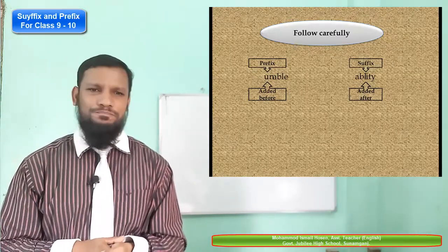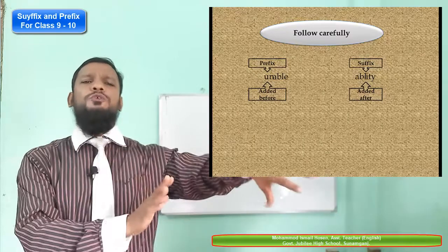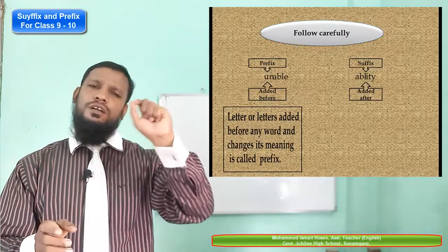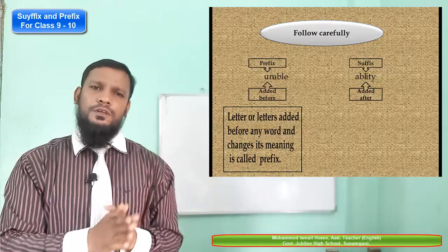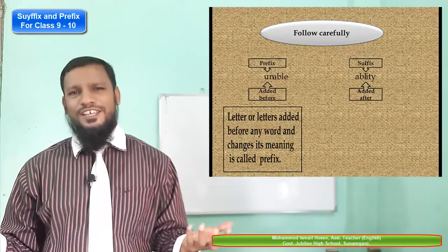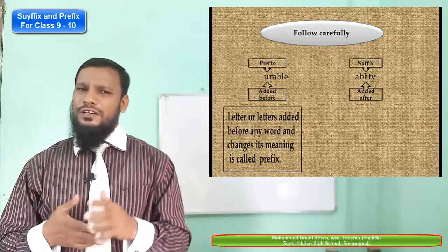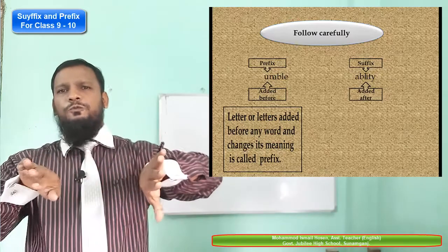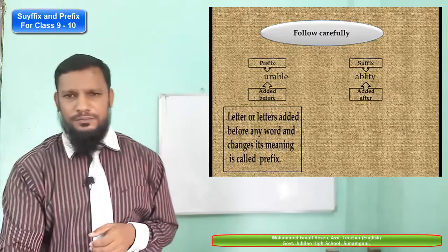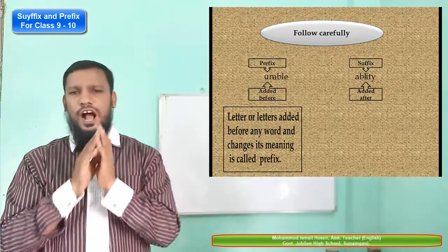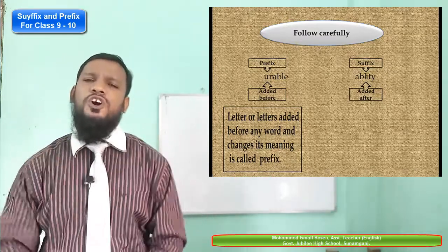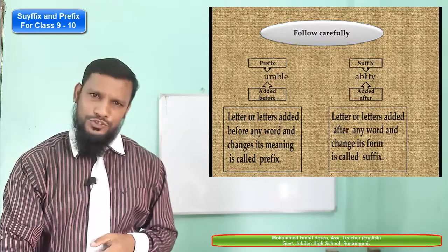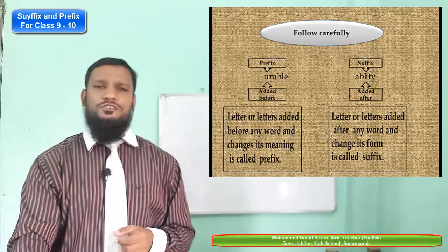Letter or letters added before any word that changes its meaning — it's called a prefix. Because 'able' means ability, but 'unable' and 'inability' are different — opposite words. But letter or letters added after any word that changes its form — it's called a suffix, like 'ability'. It just changes its form — the part of speech changes.